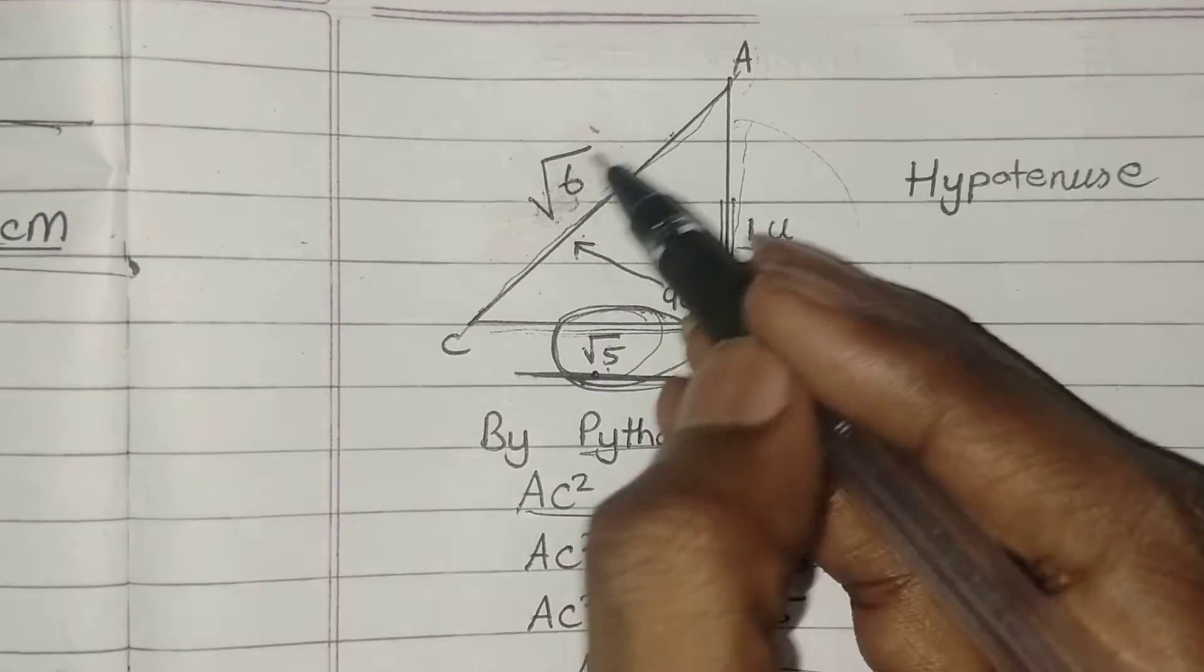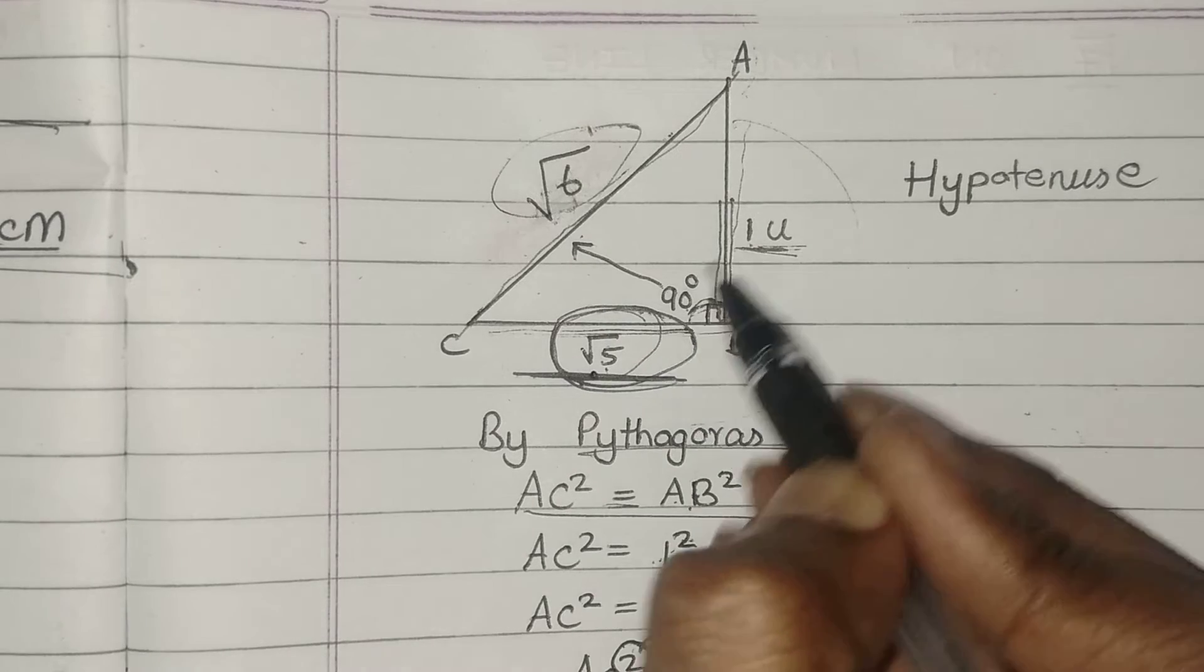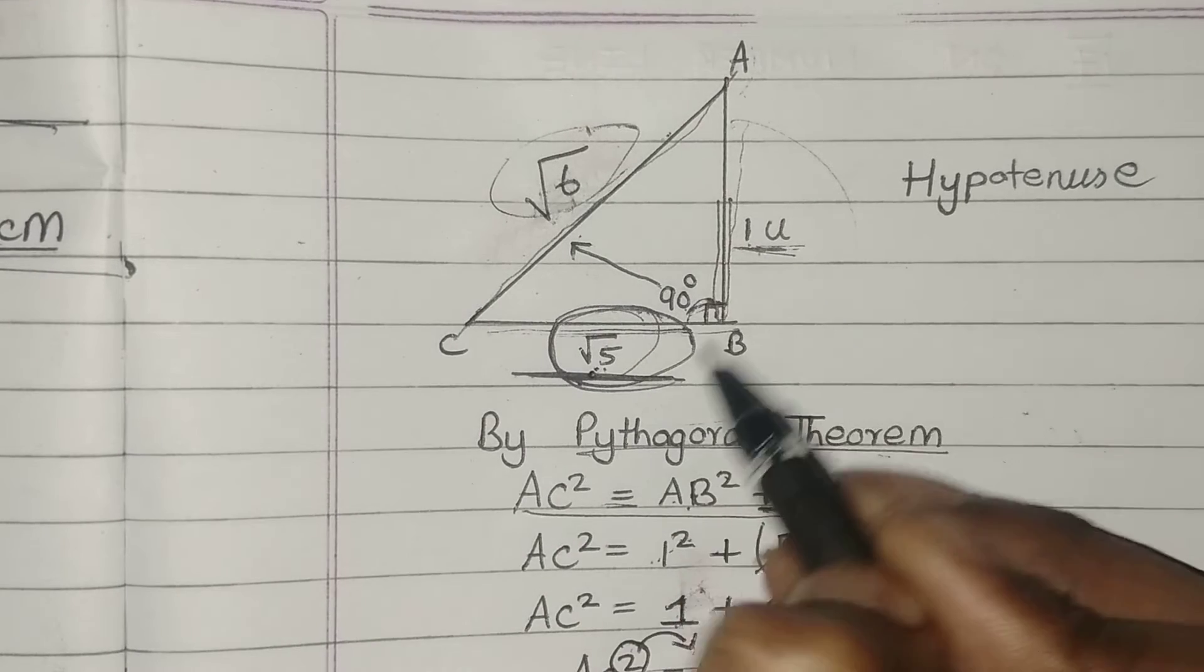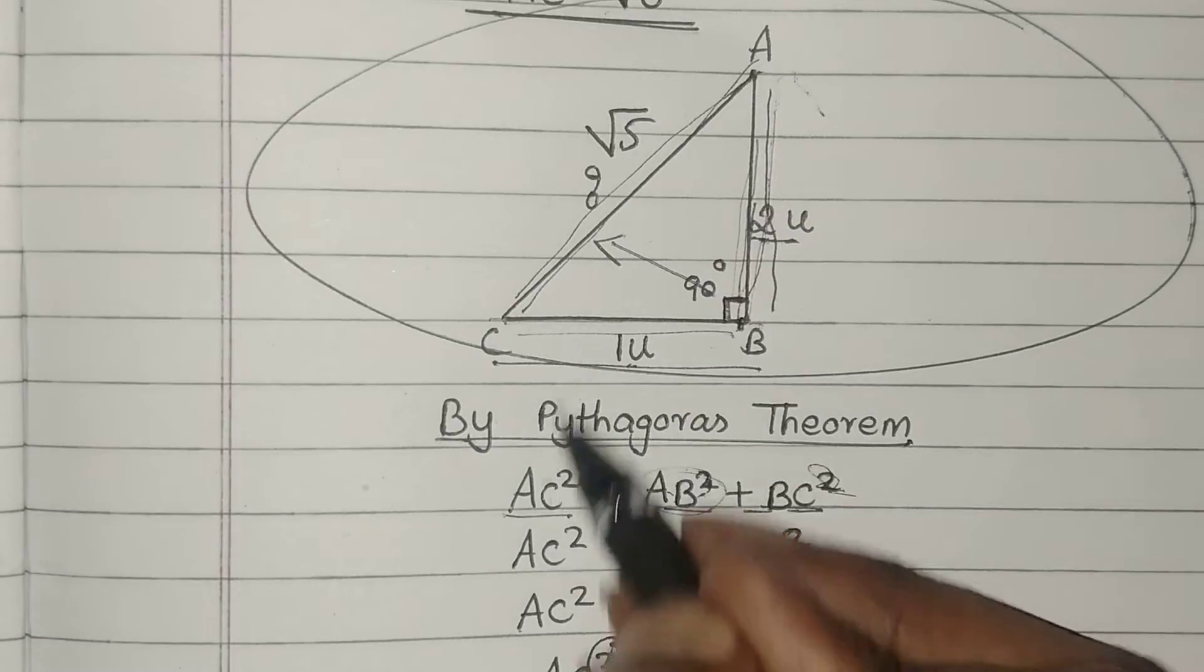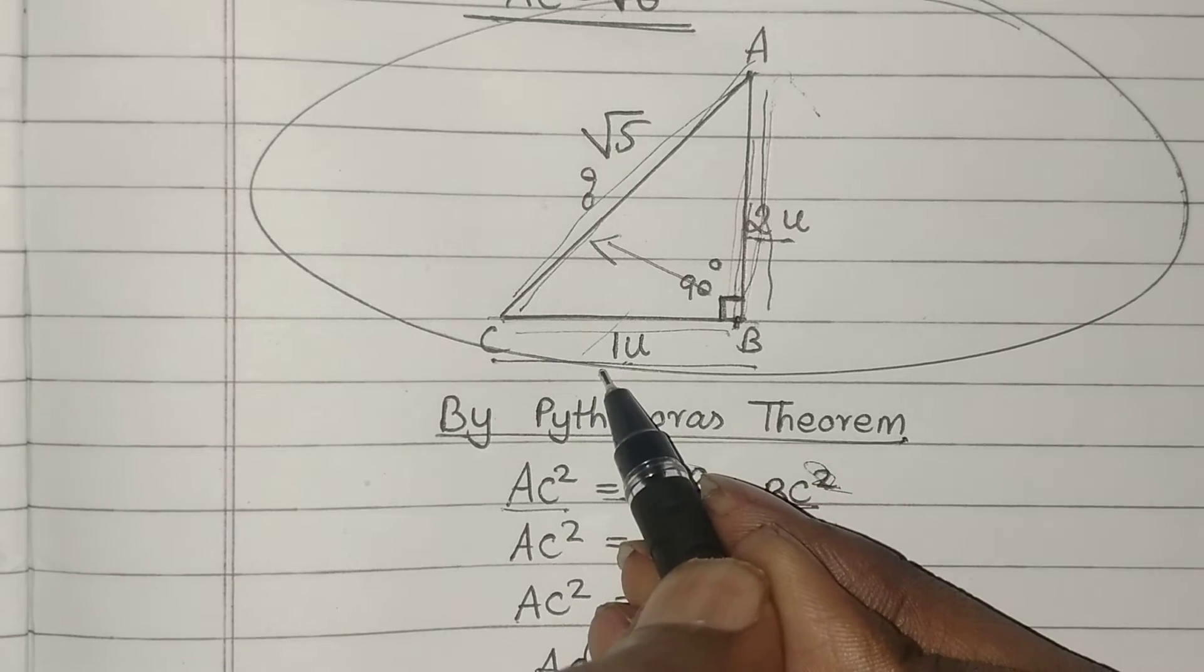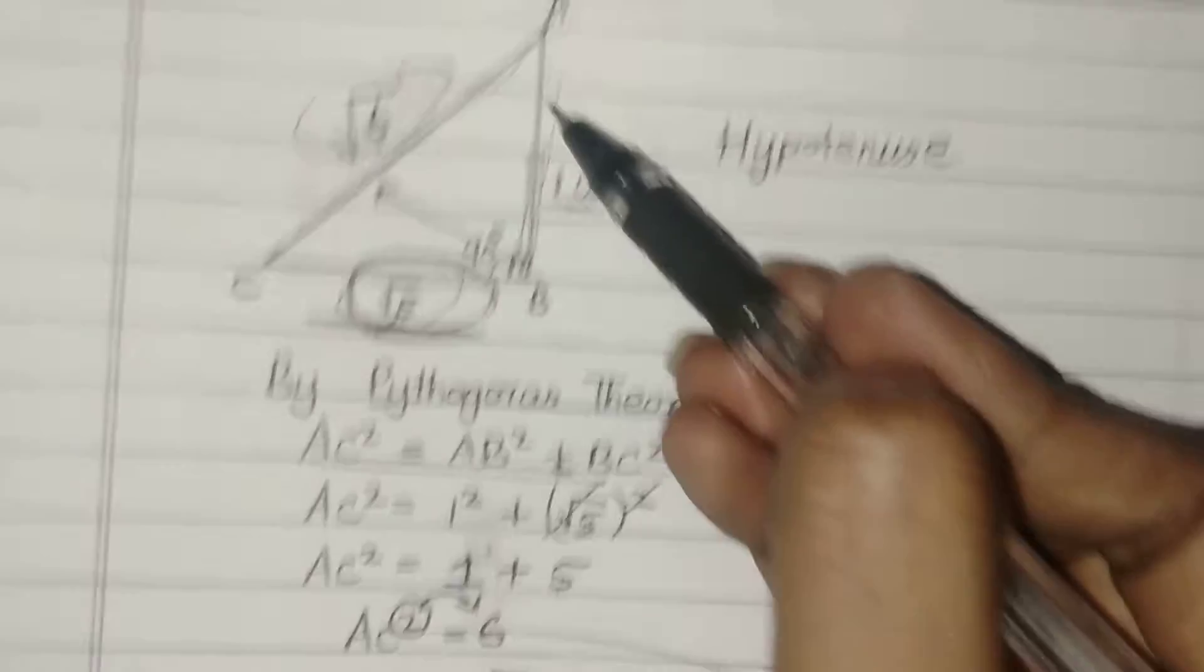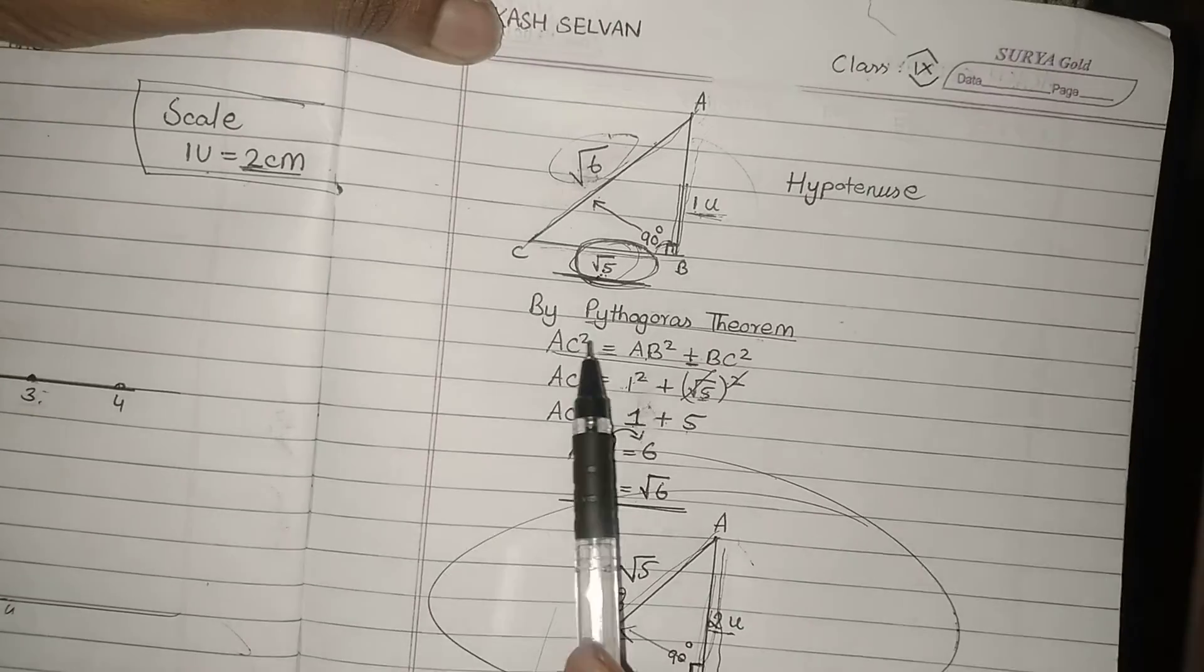This concept will give us how to locate root 6 on a number line. That is root 5 and 1 you should take as another two sides. And you have to know how to locate root 5 first. To locate root 5, this is the concept: taking 2 units and 1 unit as other sides. So we have three basic constructions. Can you see here?